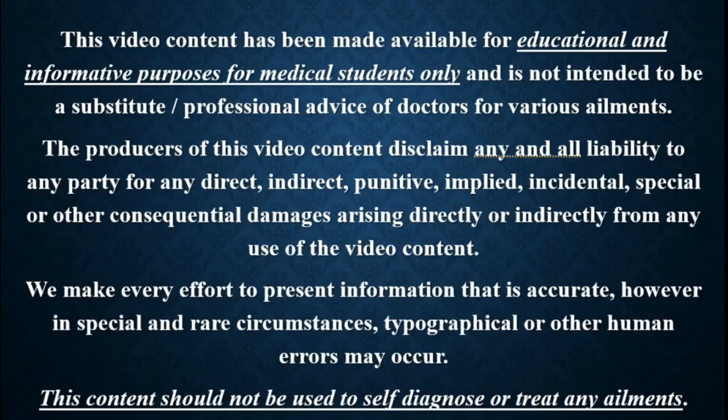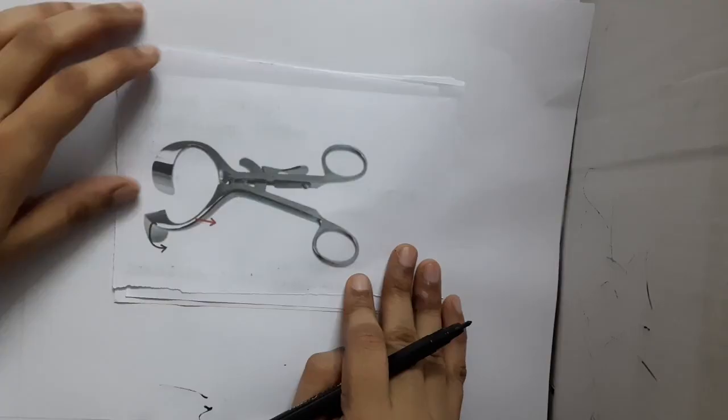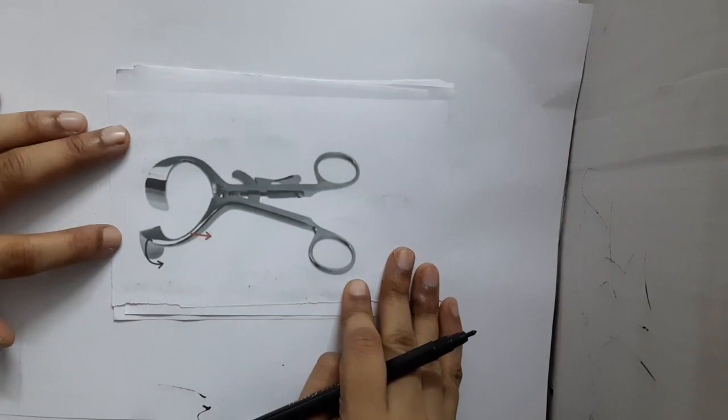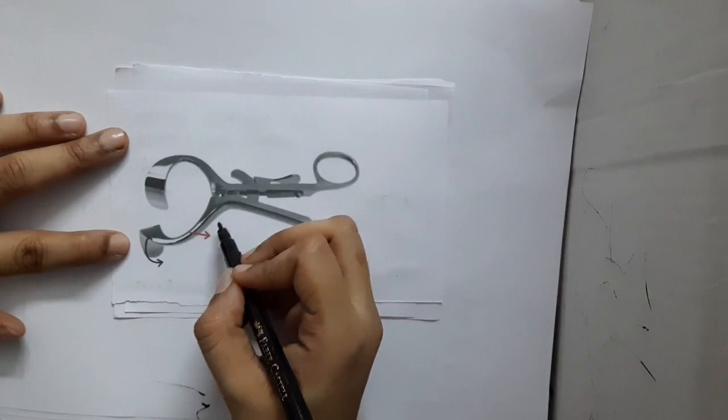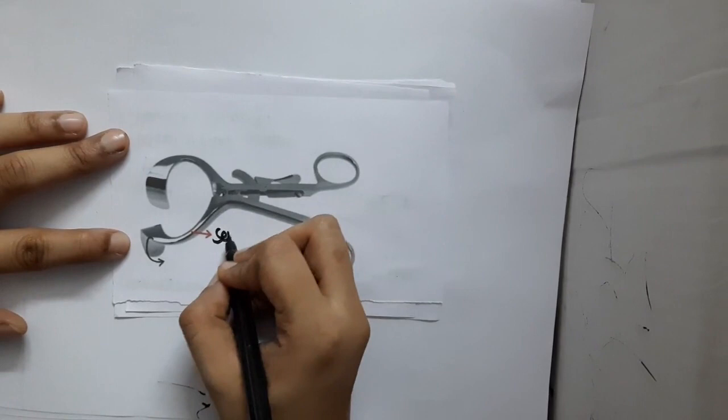Hello friends, welcome to Creative Medicine. In this lecture, we will learn to identify the instrument. If you see this instrument, it has a handle, and here you will see the curved, semicircular blade.